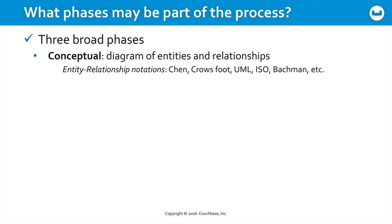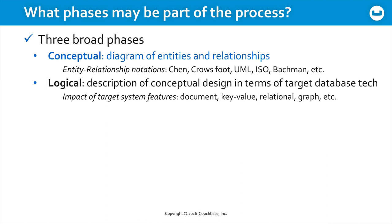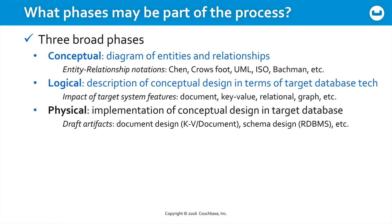The logical phase is where you begin to anticipate how your underlying technology is going to impact your design. So perhaps you begin thinking of your entities as classes or something of that sort, beginning to understand how all of this might work together given the underlying database system — documents, key-value, or graph — or you might even be using old-style relational technology. Last, there's the physical phase, and this is when you begin the process of implementing your conceptual design in your target technology. This is where you might begin to draft actual JSON documents, or if you're using old-style technology, building out the rigid fixed table structure that you're going to begin shoving data into later. But we'll get back to that.